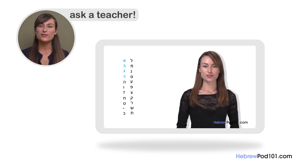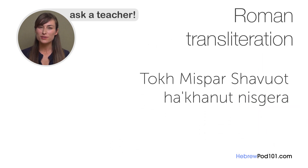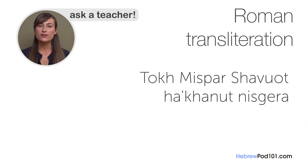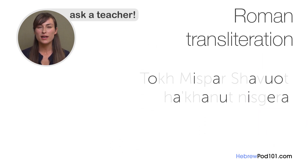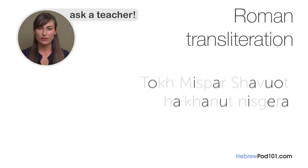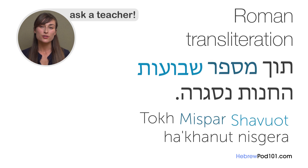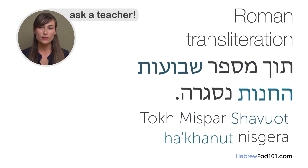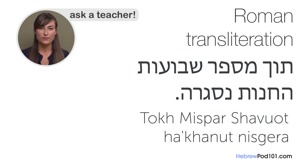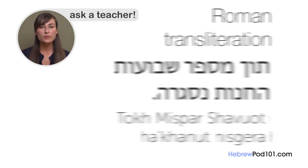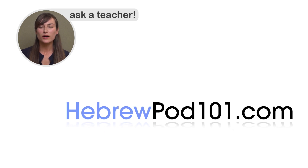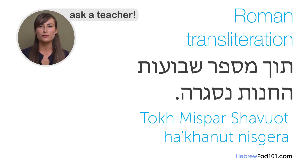There are also a number of systems of Roman transliteration. These almost always include vowels to help you read. For example, the sentence above can be read using romanization. All beginner materials at HebrewPod101.com include this kind of romanization.